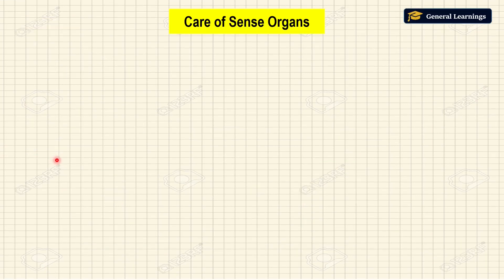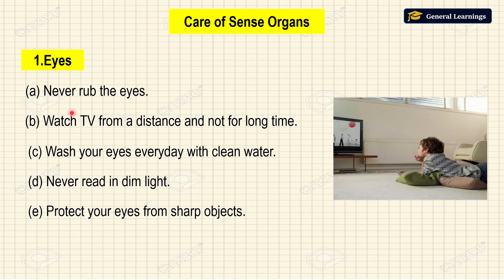Next we will see how to care for our sense organs. First, about eyes: we should never rub our eyes. We should always watch TV from a distance and not for a long time. Wash your eyes everyday with clean water. Never read in dim light. Protect your eyes from sharp objects.